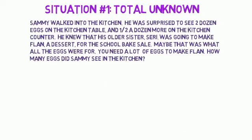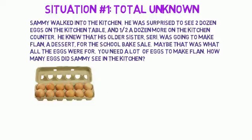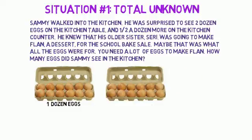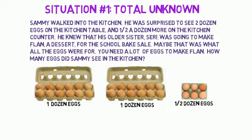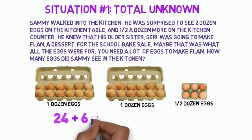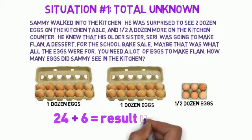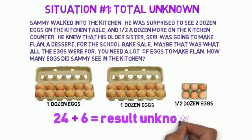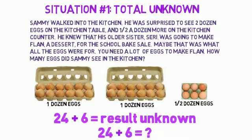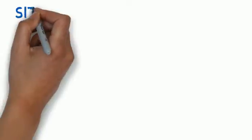We know that he saw two dozen eggs on the kitchen table — here's one dozen eggs, and now we have another dozen eggs for two dozen eggs. And half a dozen more on the kitchen counter, that's six eggs. So two dozen eggs is 24 eggs, and half a dozen eggs is six eggs. So we have 24 plus six, giving us a result unknown — that's what we're trying to find out. How many eggs did Sammy see in the kitchen? 24 plus six gives us our result unknown.